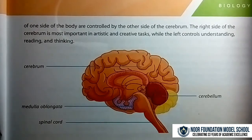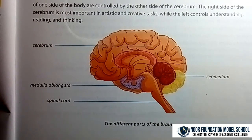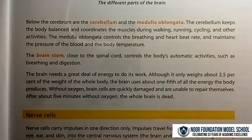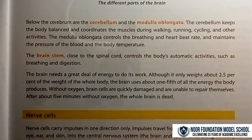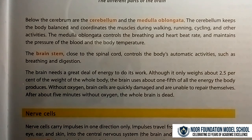This diagram shows the different parts of the brain: spinal cord, medulla oblongata, cerebrum, and cerebellum. Below the cerebrum is the cerebellum, which keeps the body balanced and coordinates the muscles during walking, running, cycling, and other activities.